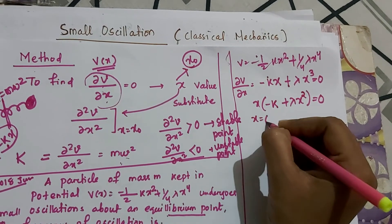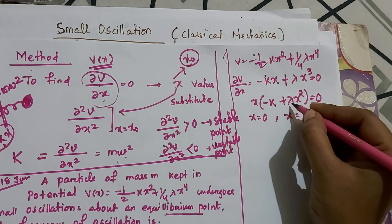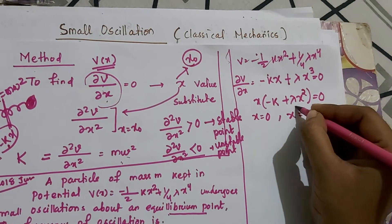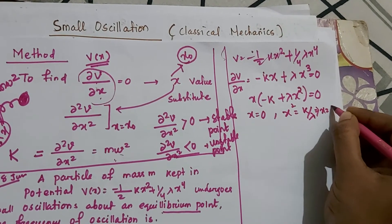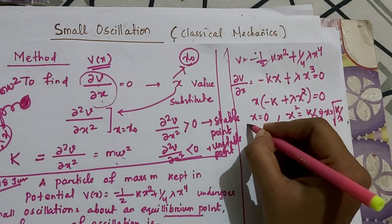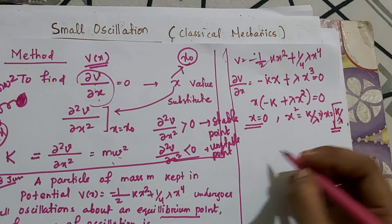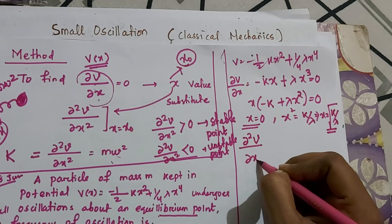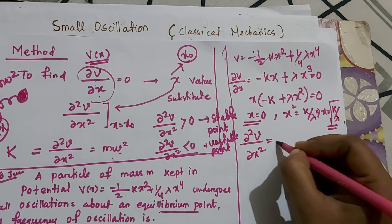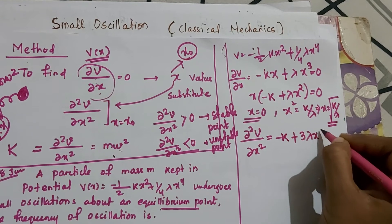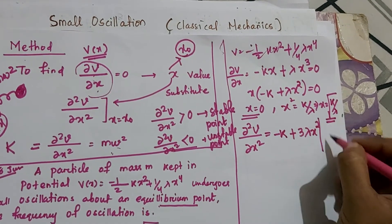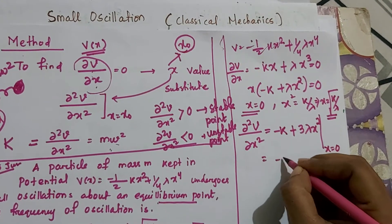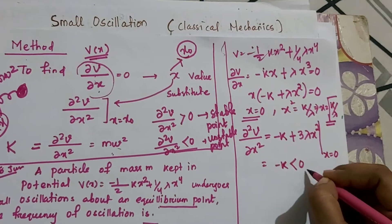From x(−k + λx²) = 0, we get two values: x = 0 and x = √(k/λ). Now we check for stable points by computing ∂²V/∂x² = −k + 3λx². At x = 0, this gives −k, which is less than zero — so x = 0 is an unstable point.